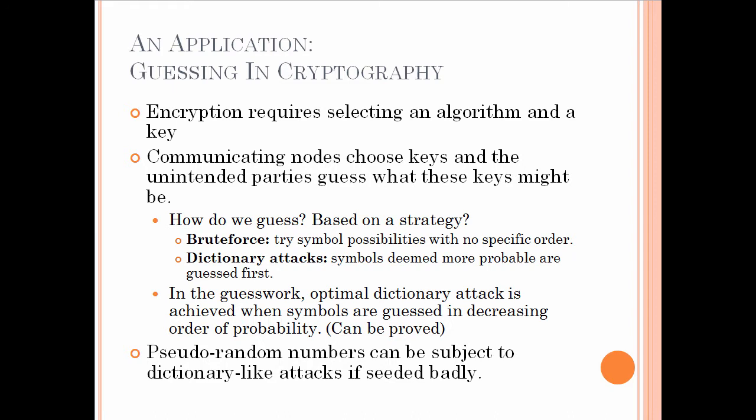Although we'll dedicate an entire lecture to various applications of guesswork, let us give one of the most obvious applications — guessing as applied to cryptography. In any communication scenario, messages are encrypted against potential eavesdroppers. Such encryption allows only two parties to share information. In a typical encryption process, a special smart design algorithm is used with a key. Communicating nodes choose keys, and unintended parties must guess what these keys might be. The fundamental question is: do we have an optimal or suboptimal guessing strategy?